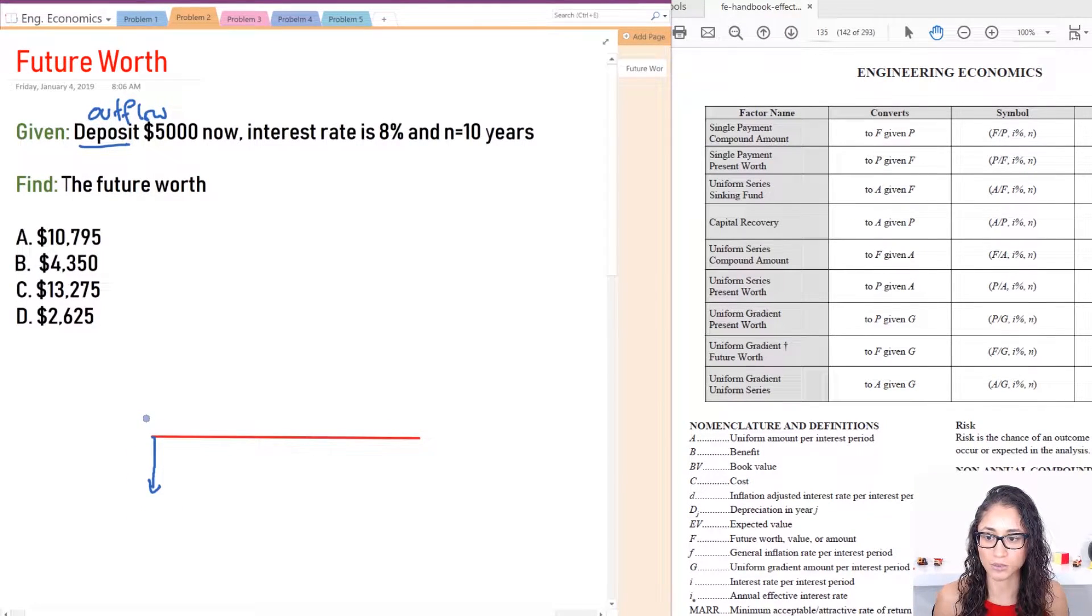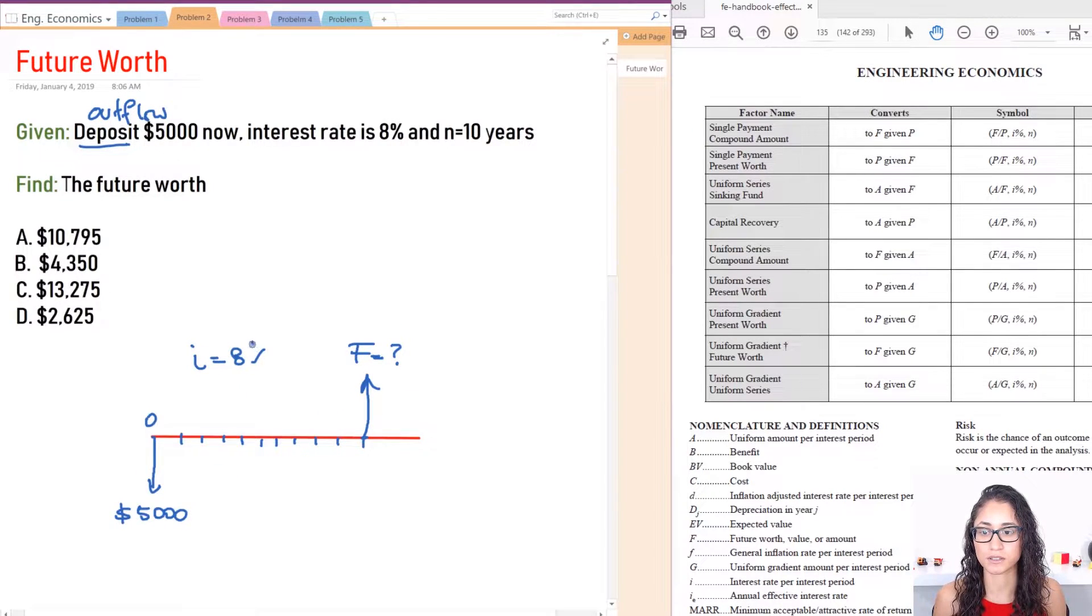So today which is zero, we're going to deposit $5,000. Now in 10 years, 1, 2... in 10 years we want to know what is the value of that $5,000, so that's going to be an inflow and we want to know what this value is, and the interest rate is 8%. So this is what your cash flow diagram should look like.